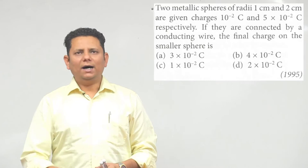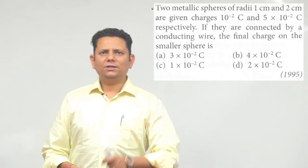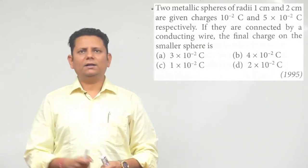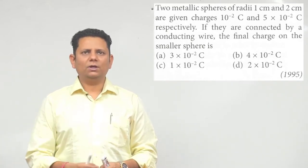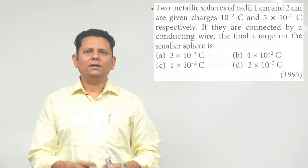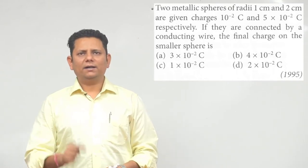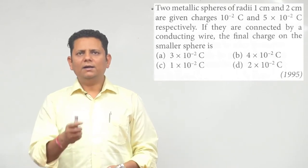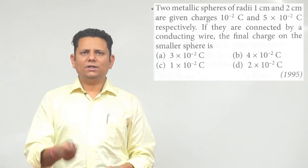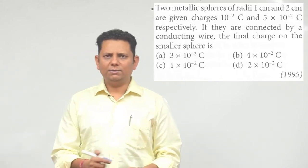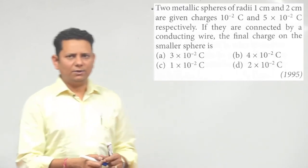Two metallic spheres of radii 1 centimeter and 2 centimeter are given charges 10 to the power minus 2 coulomb and 5 into 10 to the power minus 2 coulomb respectively. If they are connected by a conducting wire, find the final charge on the small sphere.